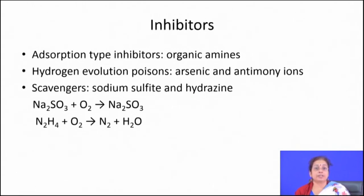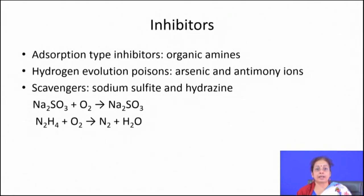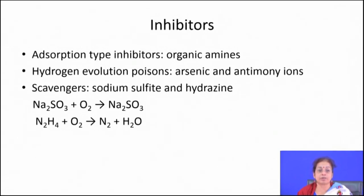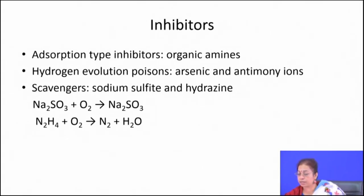Adsorption type inhibitors get adsorbed over the surface — like organic amines — which act as a barrier so the surface is no longer in contact with the solution. Hydrogen evolution poisons like arsenic and antimony ions reduce the tendency of hydrogen embrittlement and stress corrosion cracking to a large extent. Scavengers like sodium sulphite take away oxygen from the system and by that process reduce the aggressiveness of the environment.